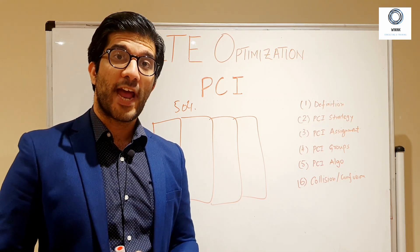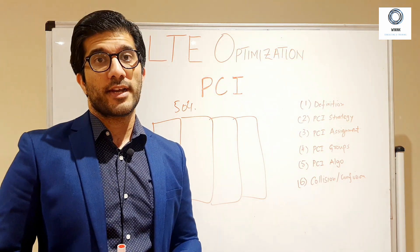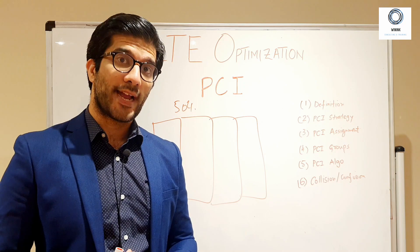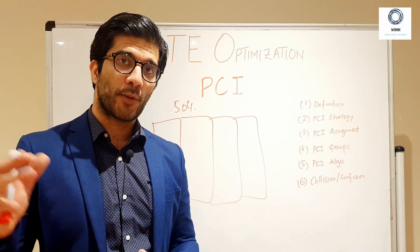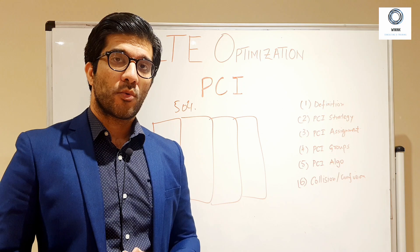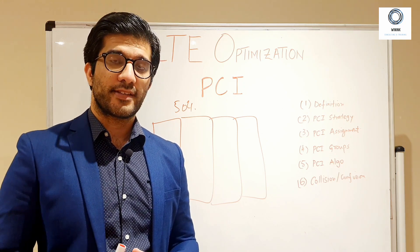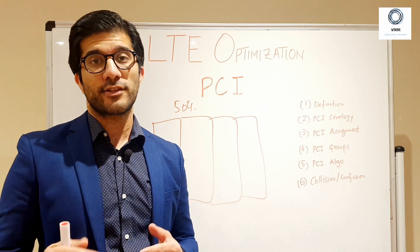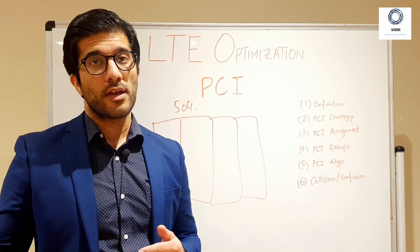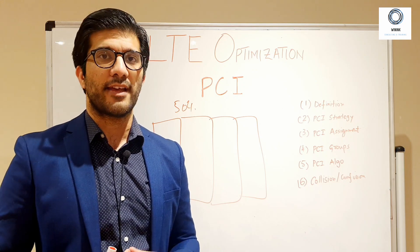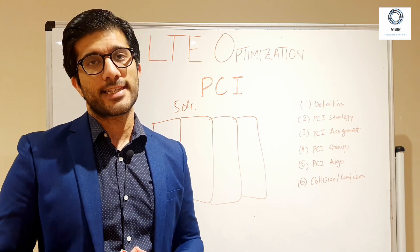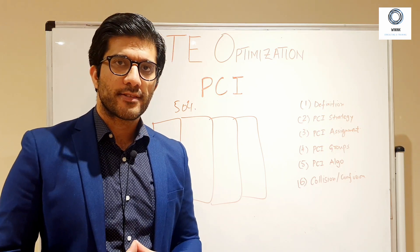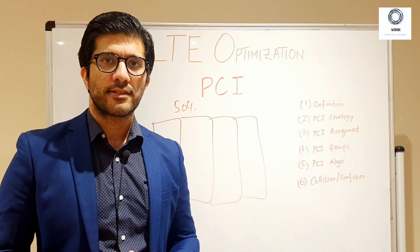PCI confusion usually happens in terms of handovers. The mobile is sent a command to camp on a particular target cell using its PCI. However, the mobile attempts to hand over to a cell that is actually far away but shares the same PCI — not the intended target cell. This results in a handover drop, which impacts your retainability KPIs.